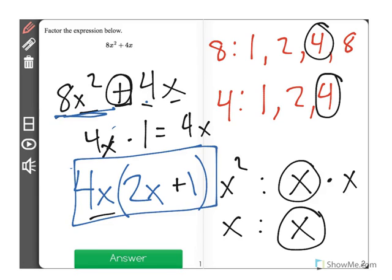For our correct factoring, 4x times 2x plus 1.